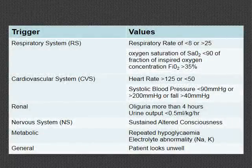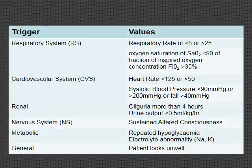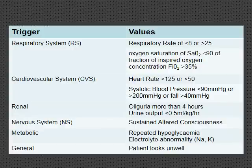This slide shows some of the emergency triggers across various systems — respiratory, cardiovascular, renal, nervous, metabolic and general — that are often triggers for doctors referring patients to intensive care. For example, if the respiratory rate is too low or too high, or the patient is not getting enough oxygen and is desaturating, an outreach nurse or the intensive care team will come and visit the patient, support them, and then decide if ICU admission is appropriate.